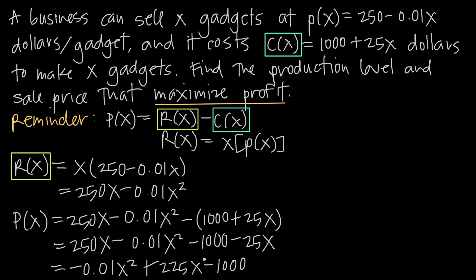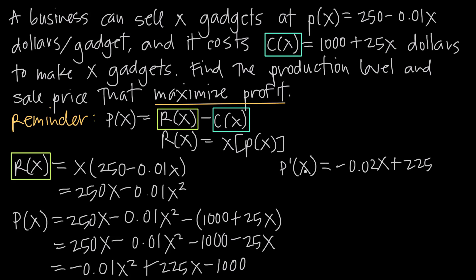Now we have a profit function in terms of one variable, so we can take its derivative. Whatever we're asked to maximize or minimize, we need to take the derivative of that function. The derivative P'(x) equals negative 0.02x plus 225, since we bring the exponent down (2 times negative 0.01 = negative 0.02), the derivative of 225x is 225, and the derivative of the constant negative 1,000 is 0.